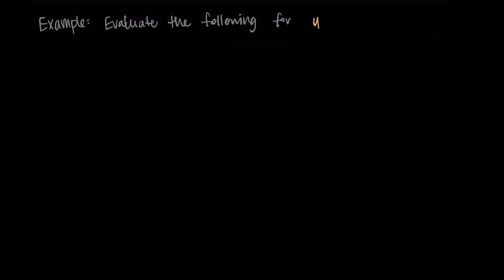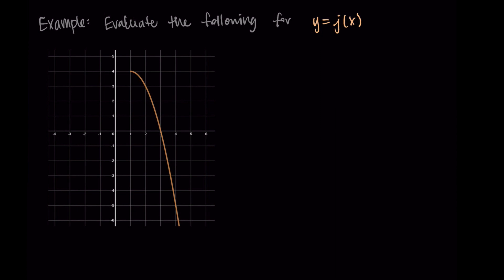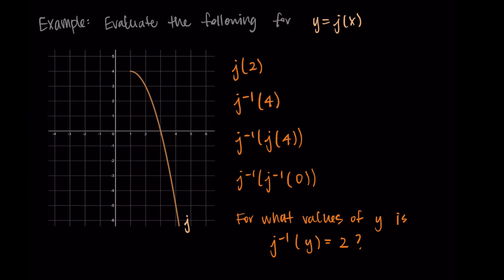Now let's do similar examples with the other graph. The full parabola wasn't one-to-one, so I'll take just half of it so it passes both the vertical and horizontal line tests. Calling this function j, we evaluate: j(2), j inverse of 4, j inverse of j(4), j inverse of j inverse of 0, and for what values of y is j inverse(y) = 2. Starting with j(2): 2 is an x value, and it corresponds to y = 3, so j(2) = 3.